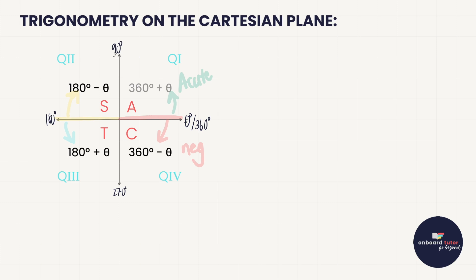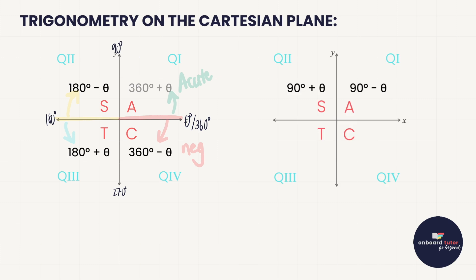You can travel around the Cartesian plane multiple times — for example, 720° is just 360° twice — so you're always allowed to add or subtract 360° because you're simply rotating one full revolution. Our goal is always to work from the x-axis, but in rare instances we work from the y-axis, giving a 90° plus or 90° minus form.